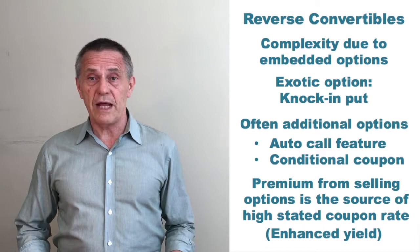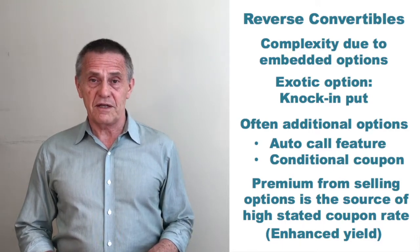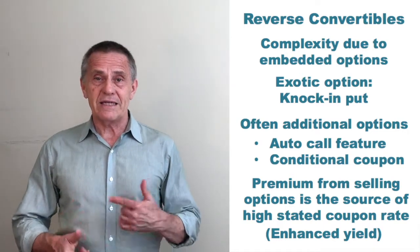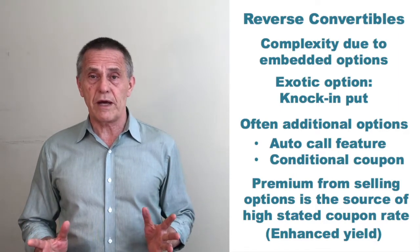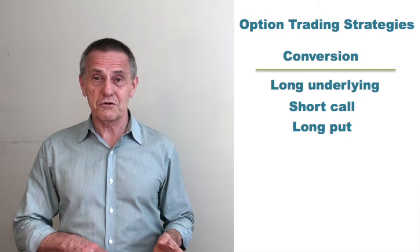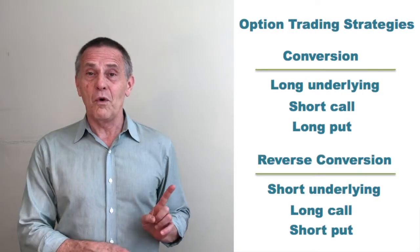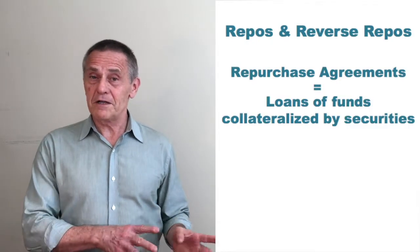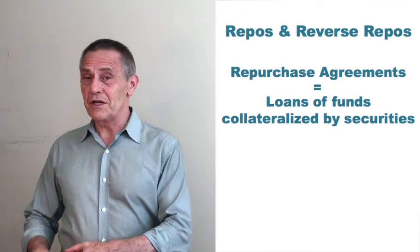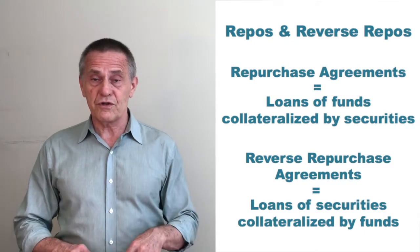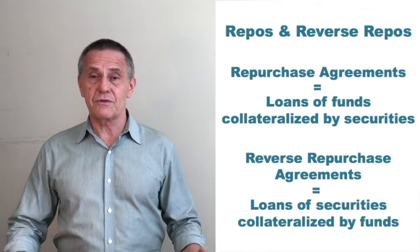The confusion that results from the name 'reverse convertible' arises from the fact that it's misleading — normally when something's described as reverse, it has either the opposite contract features or the opposite structure of a strategy. For instance, an option trading strategy known as a conversion has a sister strategy known as a reverse conversion. Or repos and reverse repos: one is a loan of money collateralized by securities, the other is a loan of securities collateralized by funds. But with a reverse convertible, there's not a reversal of the typical flow that results from exercise of the conversion feature.